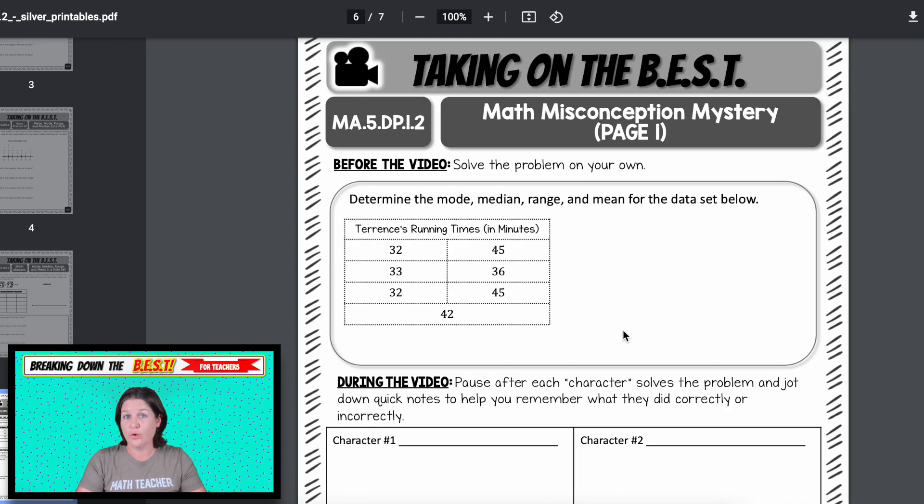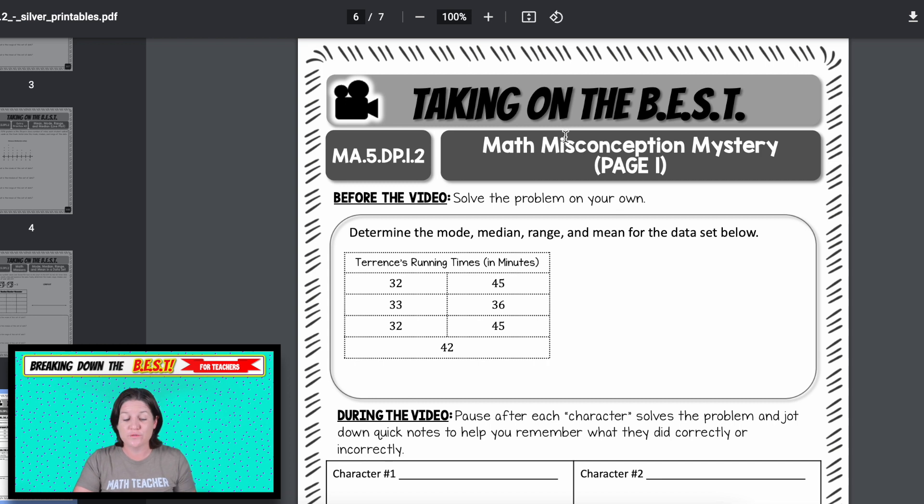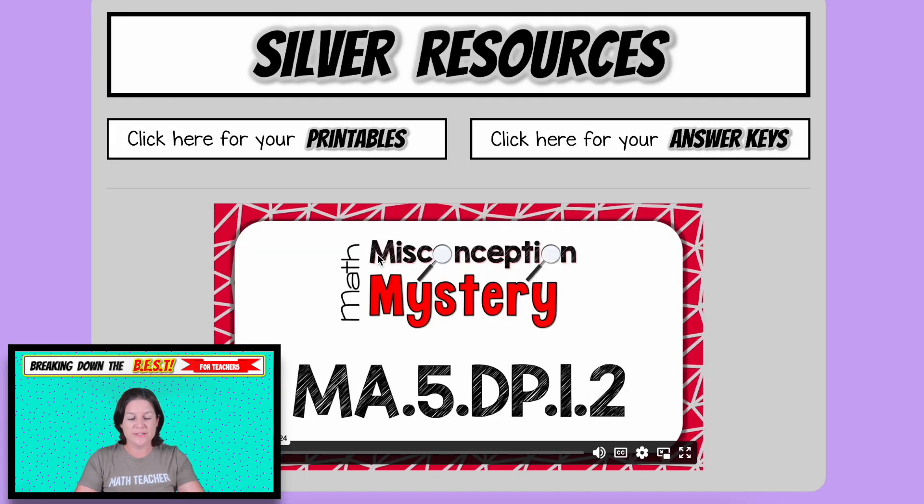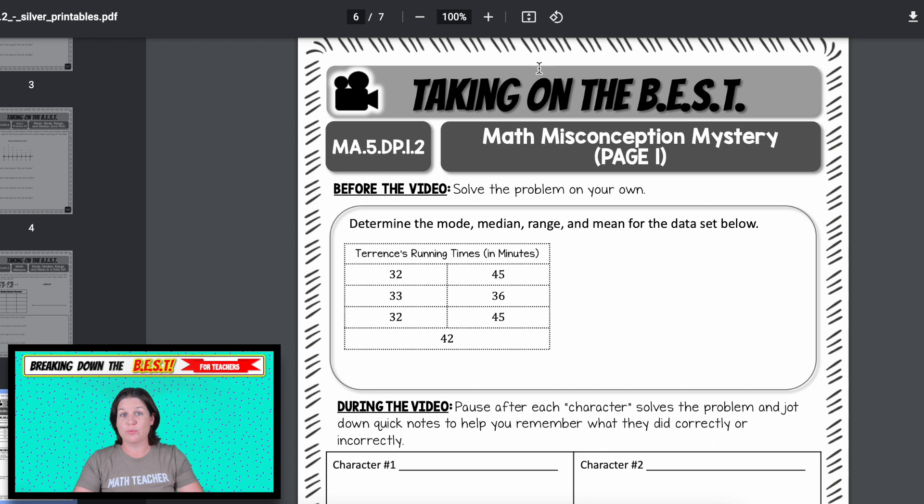And again, notice that all of these are whole numbers. We don't have any fractions, no decimals here. That's what the standard was saying. Now the final activity for the silver plan is math misconception mystery. You can see that it has the video lesson icon. It's not really a lesson, but it's a mystery video. So all you got to do is click play right there, and I will guide your students through the entire process. First, I'll say, okay, go ahead and solve this problem on your own or with a small group.